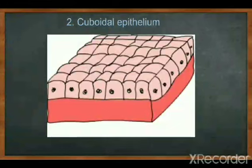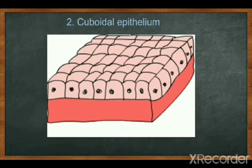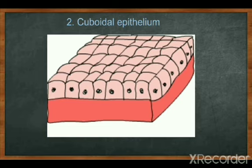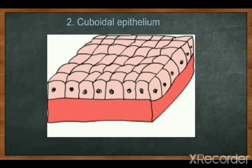The next one is cuboidal epithelium. As the name suggests, the cell shape is cube-like. The cells are polygonal when seen from the surface. The location is the nephron of the kidney — the unit of the kidney is called nephron, which helps to filter nitrogenous waste products and form urine. Also found in gonads (testis and ovary) and sweat glands. Its main function is protection.